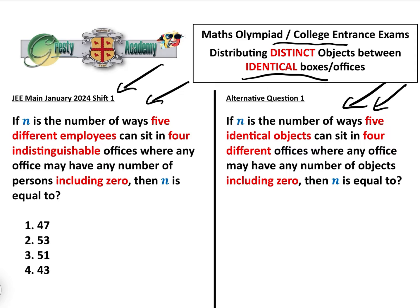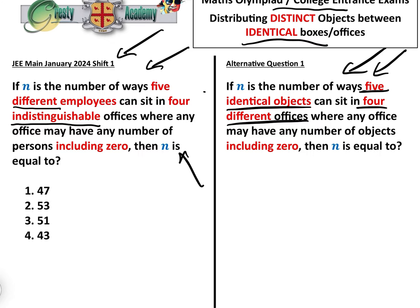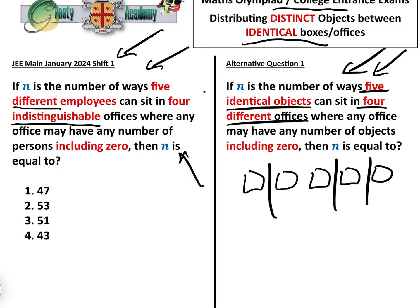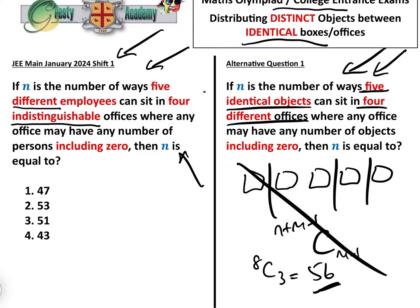Let's answer this question first — the one most people think this question is, but it isn't. If we analyze what people actually do: we have five different employees sitting in four indistinguishable or identical offices, versus what people attempt — five identical objects sitting in four different offices. They use stars and bars with five identical objects and three dividers between four different offices, using the formula n plus r minus one choose r minus one, giving us 8C3, which equals 56. This is the correct way to answer that other question — but it is the wrong way to answer this one.